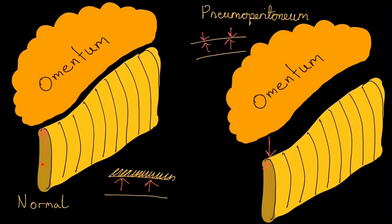The gas within the lumen interfaces the bowel wall, and this is visible on plain film. The bowel wall has the same radiographic density as the omentum, and its interface with it is not visible on plain film. Therefore, in normal individuals, an interface is seen showing gas on one side and soft tissue on the other.